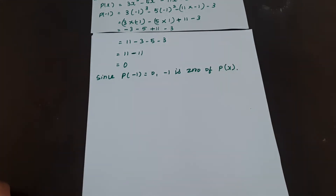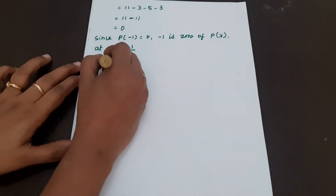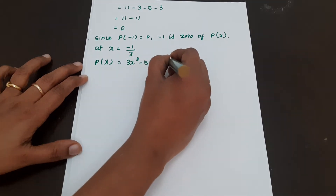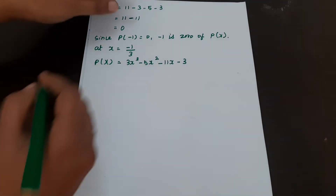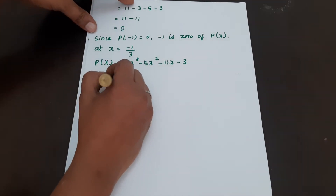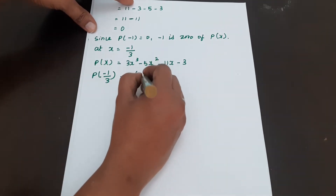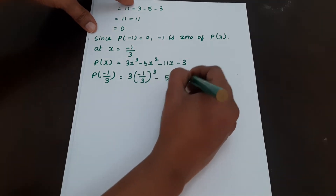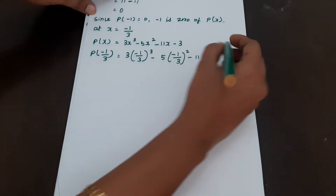Now we verify x = -1/3. We have P(x) = 3x³ - 5x² - 11x - 3. At x = -1/3: P(-1/3) = 3(-1/3)³ - 5(-1/3)² - 11(-1/3) - 3.